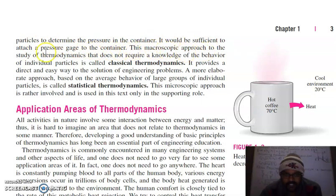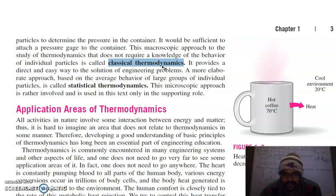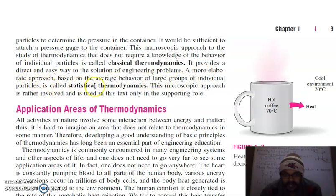This macroscopic approach to the study of thermodynamics, which does not require knowledge of the behavior of individual particles, is called classical thermodynamics. We can measure pressure of a high-pressure gas container with a pressure gauge, and we can measure the temperature of that container with a thermometer. This provides a direct and easy way to solve engineering problems. A more elaborate approach based on the average behavior of large groups of particles is called statistical thermodynamics.